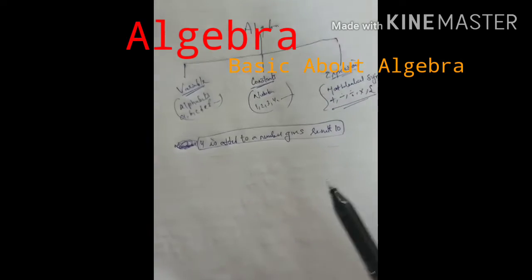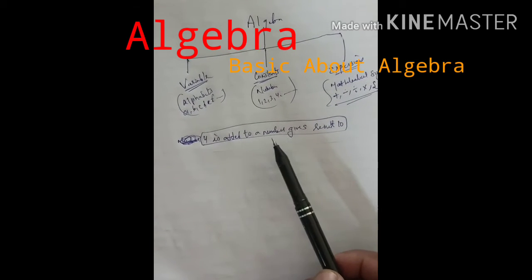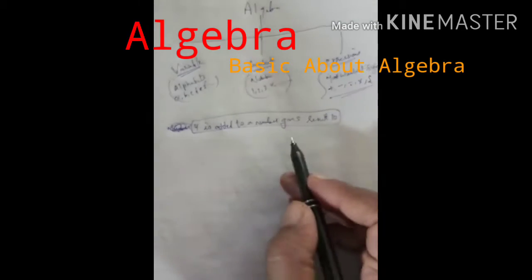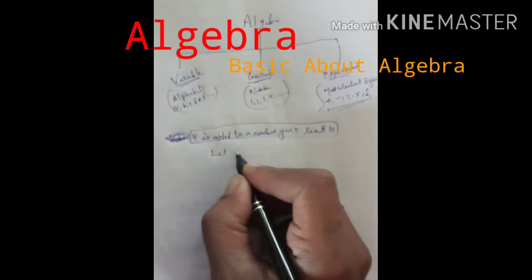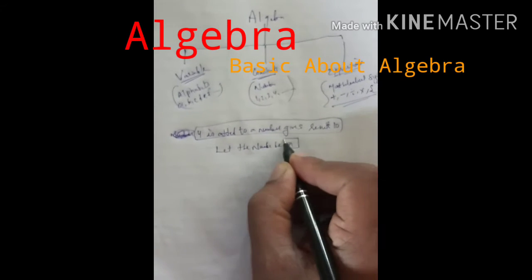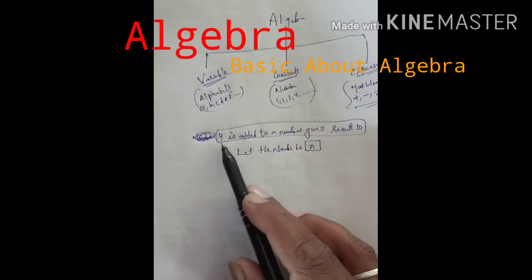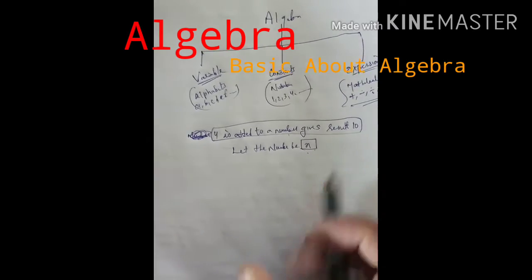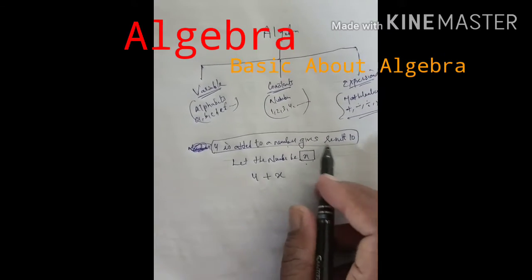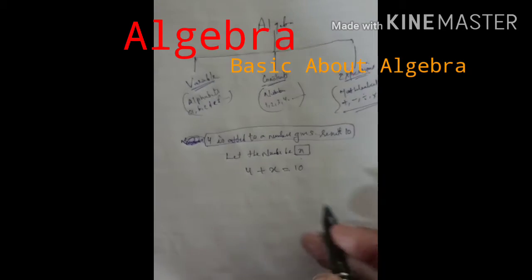Questions पर concentrate करते हैं। Question है कि 4 is added to a number — 4 में ऐसा कौन सा number add करो कि result 10 आ जाए? तो जो number मुझे नहीं पता, यहाँ हम लेते हैं: let the number be x। जो number मुझे find करना है वो x हो गया। तो 4 plus x equals to 10। अब यह solve करके देखो।